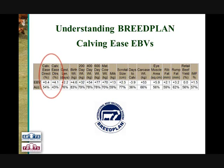This video presentation explains the BreedPlan Calving Ease EBVs, both how to interpret the EBVs and also what information is used to calculate them. As you can see on the slide, there are two different Calving Ease EBVs calculated by BreedPlan: a Calving Ease Direct EBV and also a Calving Ease Daughter's EBV.